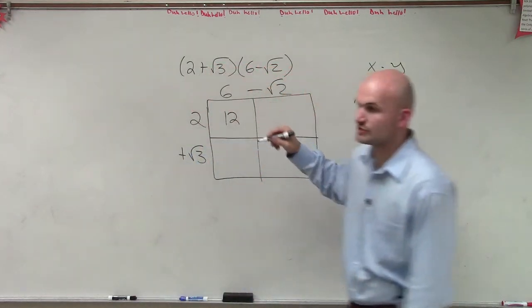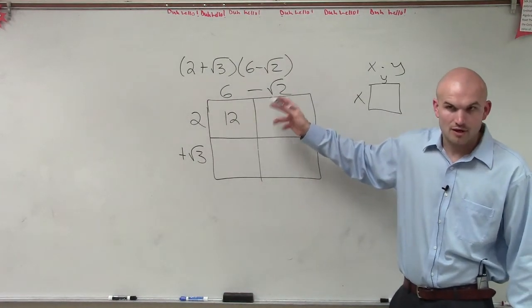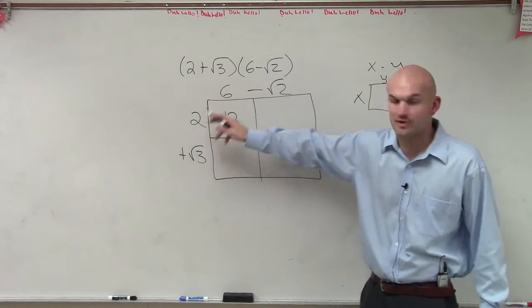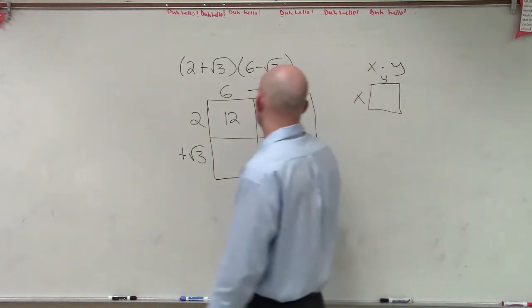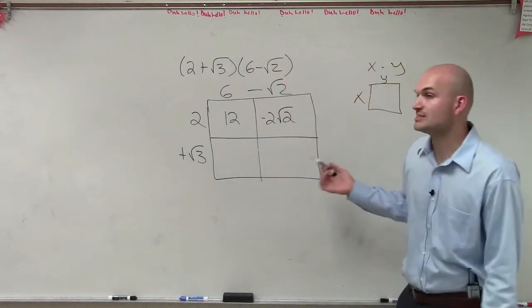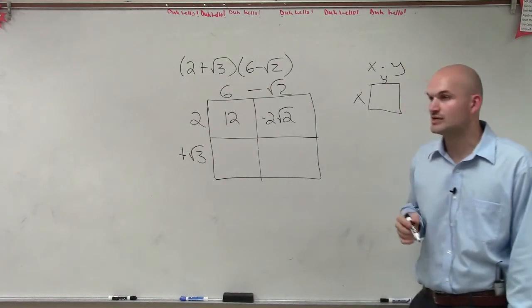2 times negative square root of 2. I can't multiply the 2 inside the square root. We know that the square root of 2 times the square root of 3 is square root of 6. But this is a whole number and this is a radical. So if it has square root, then you multiply. But since it doesn't, it's just negative 2 times square root of 2.